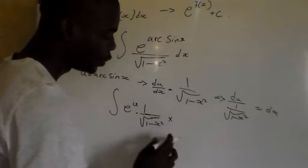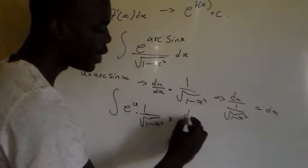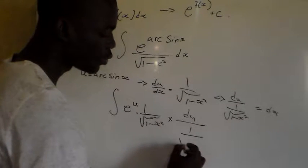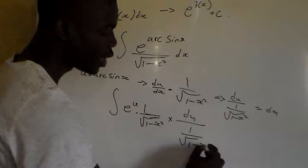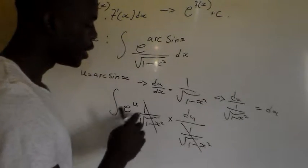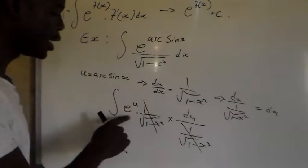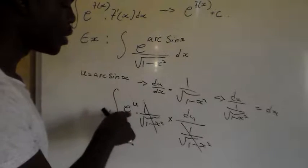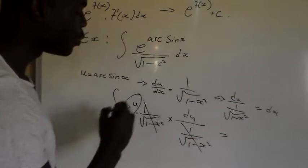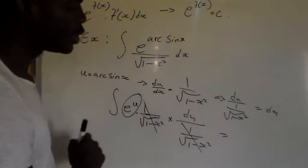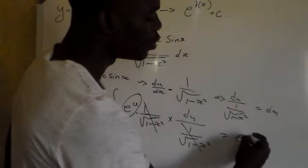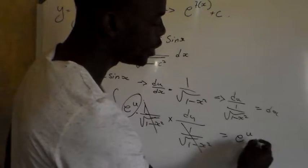So dx equals du over (1 divided by square root of 1 minus x squared). We're going to multiply by du all over 1 into square root of 1 minus x squared. Then this one and this one will cancel, and we remain with the integral of e to the power u.